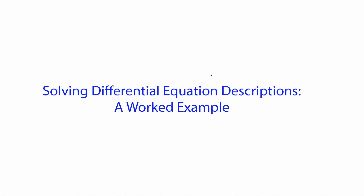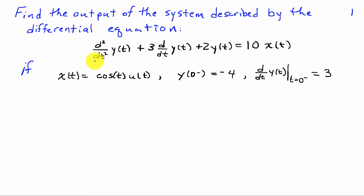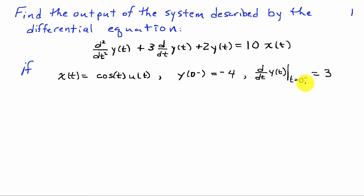In this lecture, we're going to look through an example of solving a differential equation to find the output of a system for a given input and set of initial conditions. We're defining a system in terms of the differential equation: d²/dt² y(t) + 3 d/dt y(t) + 2 y(t) = 10 x(t). We want to find the output if the input x(t) = cos(t) · u(t), with initial conditions y(0⁻) = −4 and y'(0⁻) = 3.